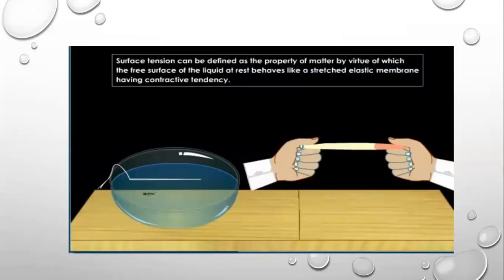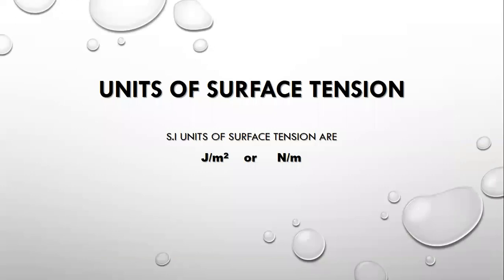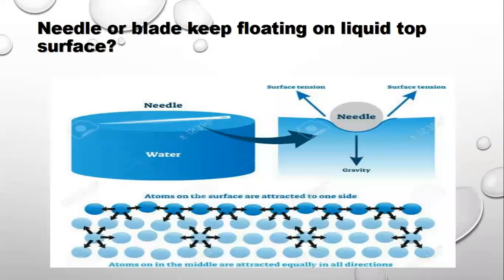Because of this surface tension, all these experiences we notice in our daily life. Units of surface tension are joules per meter square or newton per meter. Now, why does a needle or blade keep floating on the liquid top surface? When a needle is placed gently on the surface of the liquid, it starts floating. The needle is experiencing a downward force due to gravity. At the same time, all the surface molecules are experiencing a downward force and attracting each other, and this surface is behaving like a stretched elastic membrane. This needle keeps floating without drowning or dropping into the liquid.